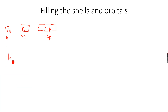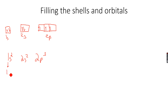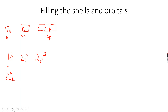From now onwards, we write the electronic configuration as 1s², 2s², 2p³. Here '1' represents the first principal shell, 's' represents the s subshell, and the superscript '2' represents the number of electrons in that subshell. Then 2s² means two electrons in the s subshell of the second shell, and 2p³ means three electrons in the p subshell of the second shell.